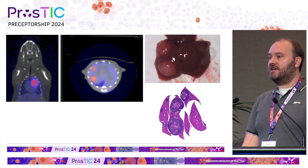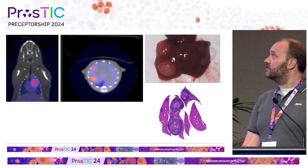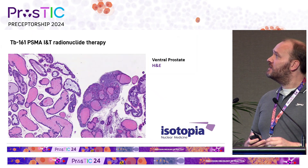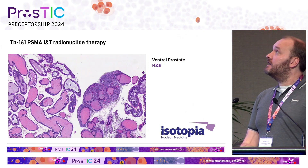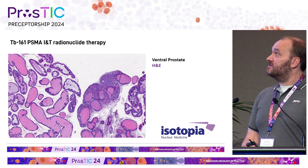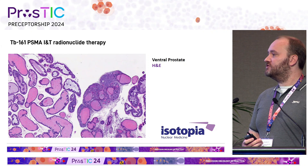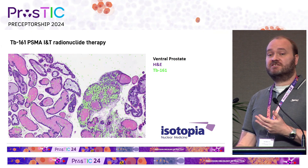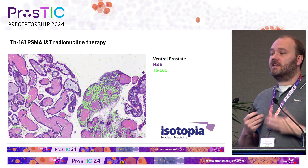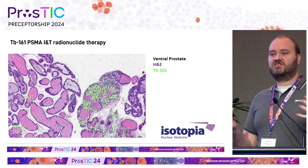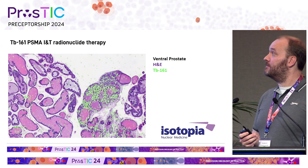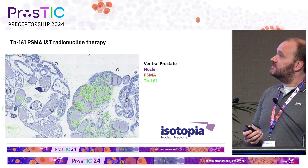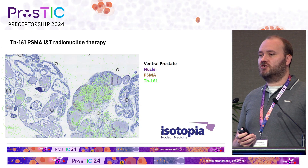Another model being developed as part of the TACTICAL program is to find other immune competent disease settings to make these explorations. One of these uses a transgenic model of prostate disease, where we've added in Terbium-161 PSMA ligand as is being used in the VIOLET preclinical study. We can see that the ligand finds the sites of disease and PSMA expression within this transgenic model. The brown staining shows where PSMA is overexpressed within this prostate tissue, corresponding to the site of greatest uptake of the Terbium-161 radioligand.